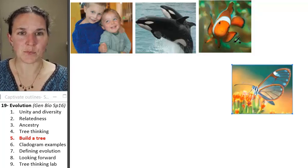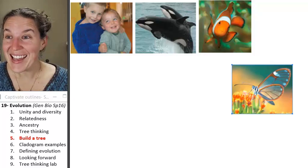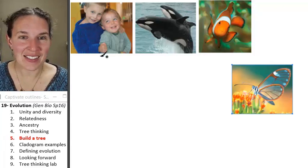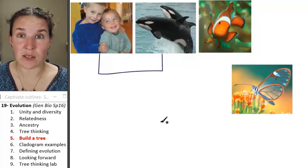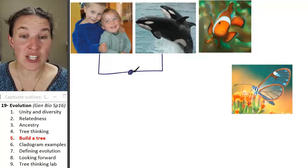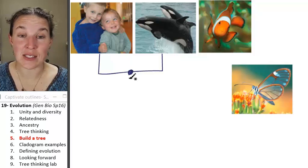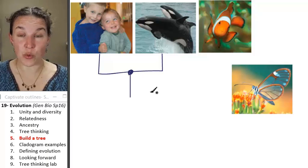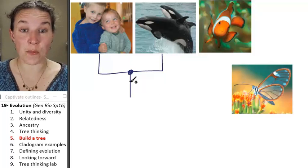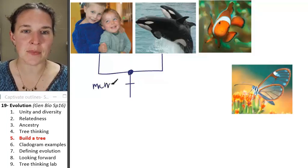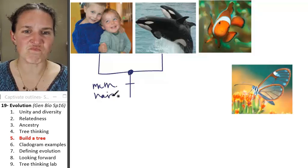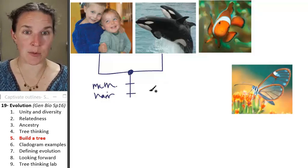So look at this. We could totally make a little line. Here's boys. Here's whales. And they share a most recent common ancestor. And do you agree that we could throw some things on there? Since they're both mammals, we could totally throw on there that they have mammaries and they have hair. Awesome. Because that just tells us, dude, they're mammals.